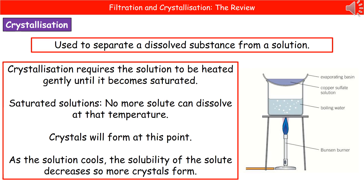The second separating technique we can use is crystallization. We use crystallization to separate a dissolved substance from the solution. The equipment we need is shown in the diagram on the right: you've got an evaporating basin containing our solution, set above a beaker with some water, which is placed above the Bunsen burner. We set it up this way rather than heating the evaporating basin directly, because for crystallization to happen properly you need the solution to be heated gently until it becomes saturated — and heating directly with a Bunsen burner is not gentle heating. Setting it above water acts like a water bath and gently heats our solution.